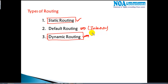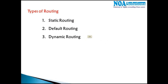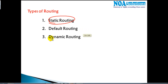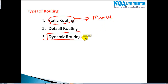Let me give a basic overview of the difference between static and dynamic routing. Static routing is manual routing — the administrator manually decides the best route. Dynamic routing is automatic routing — the router automatically learns about the networks. In static routing, the administrator is the one who decides the best route.